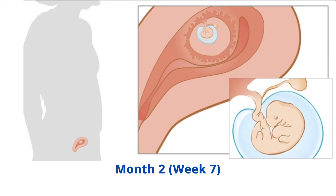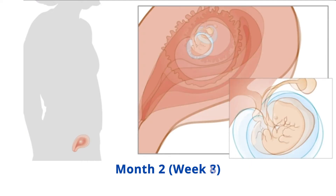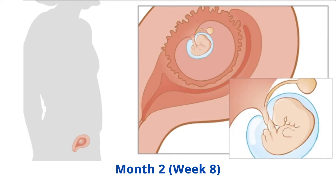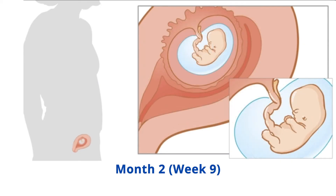Week 8: the back of the brain grows rapidly, causing the head to become much larger than the body. Little buds form at the ends of the limbs which will become fingers and toes. The ears develop close to the neck and the eyes develop on the sides of the head.